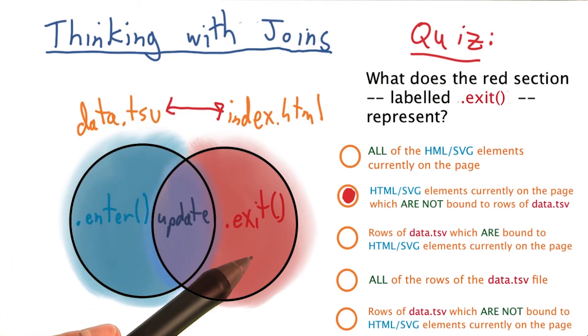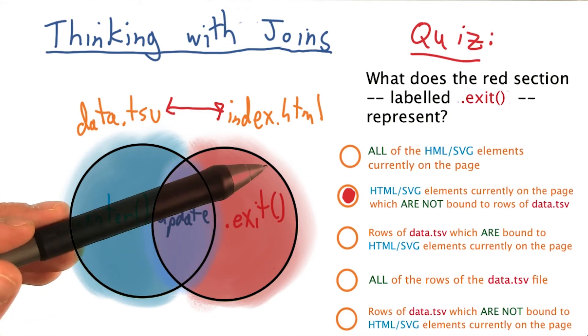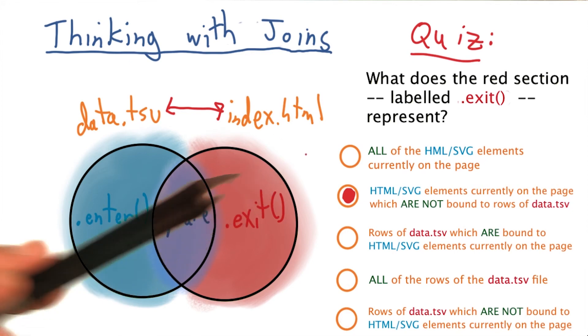.exit is usually used if you initially draw a chart and have subselections where users can filter based on a category, or some animation where the data from one point in time to the next changes. And often, .exit is used to remove elements from the page which you should no longer display.